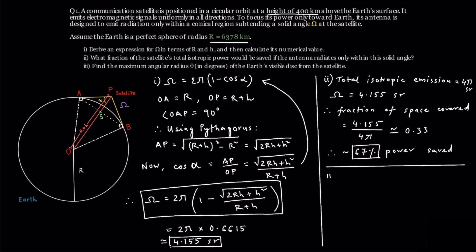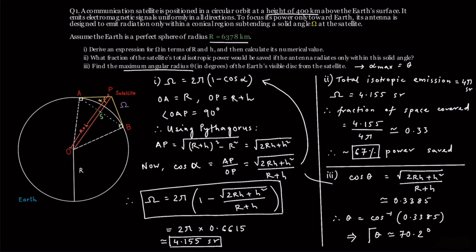Finally, part 3. We are asked to find the maximum angular radius in degrees of the Earth's visible disk from the satellite. Since the angle alpha from part 1 also represents the cone's half angle, this is the same as finding theta, where cos theta equals square root of 2RH plus h squared over r plus h. Plugging in the values again gives cos theta is approximately equal to 0.3385. And taking the inverse cosine, theta is about 70.2 degrees.